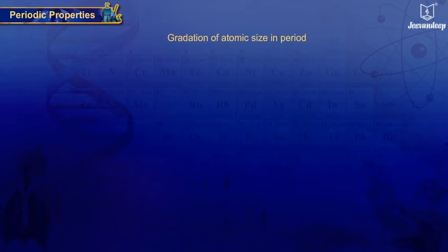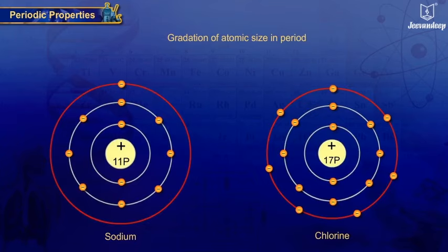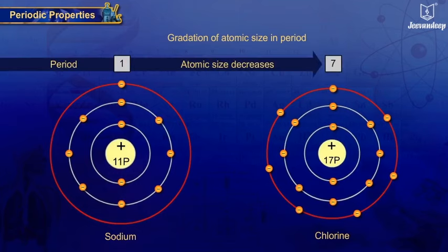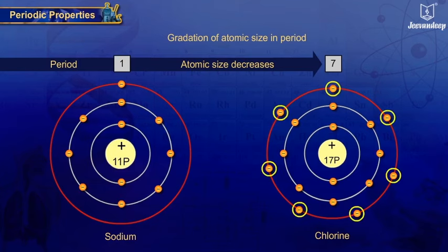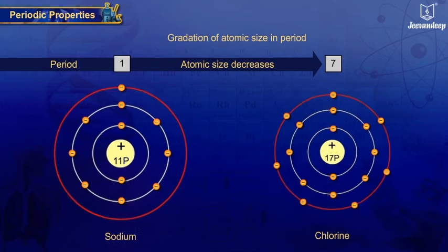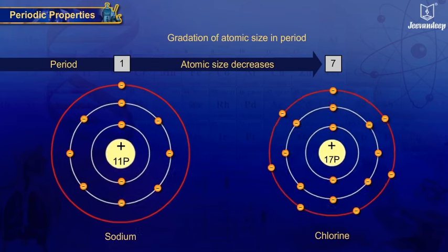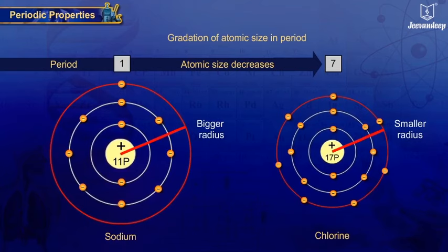Gradation of atomic size in a period: atomic size decreases from left to right, as electrons are added in the same shell and the concentration of positive charge of the nucleus increases, hence there is greater pull from the nucleus, leading to decreased size.